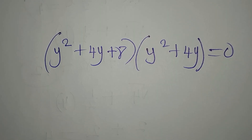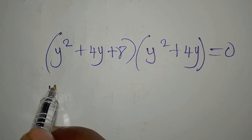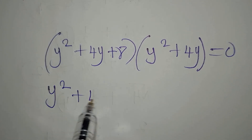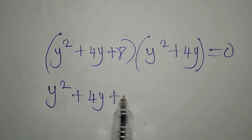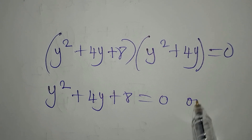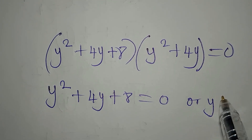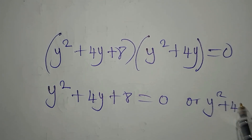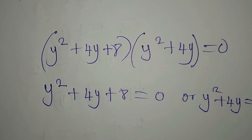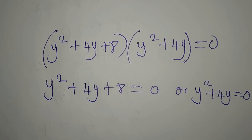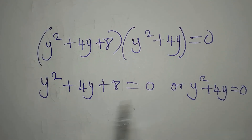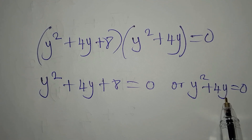So it is either y squared plus 4y plus 8 equals 0, or y squared plus 4y equals 0. I will work on the first equation before going to the other.